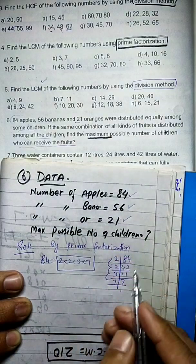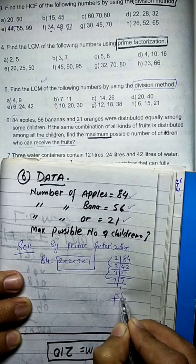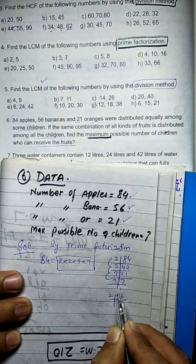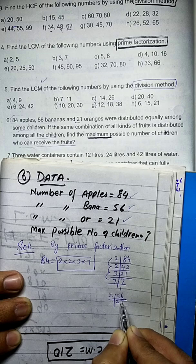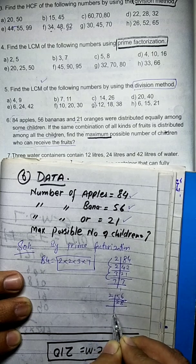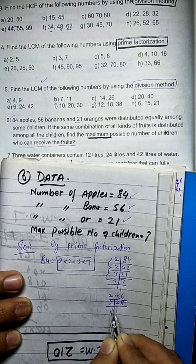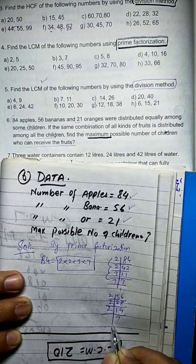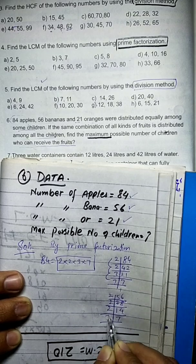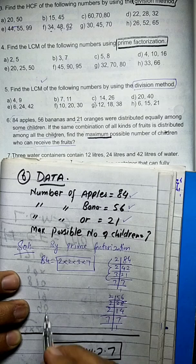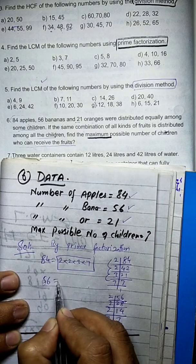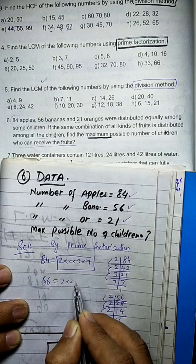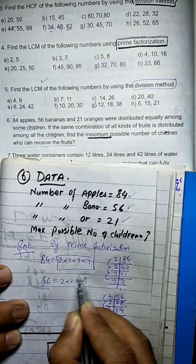For 56: dividing by 2 gives 28, dividing by 2 gives 14, dividing by 2 gives 7, dividing by 7 gives 1. So the prime factors of 56 are: 2 multiply 2 multiply 2 multiply 7.